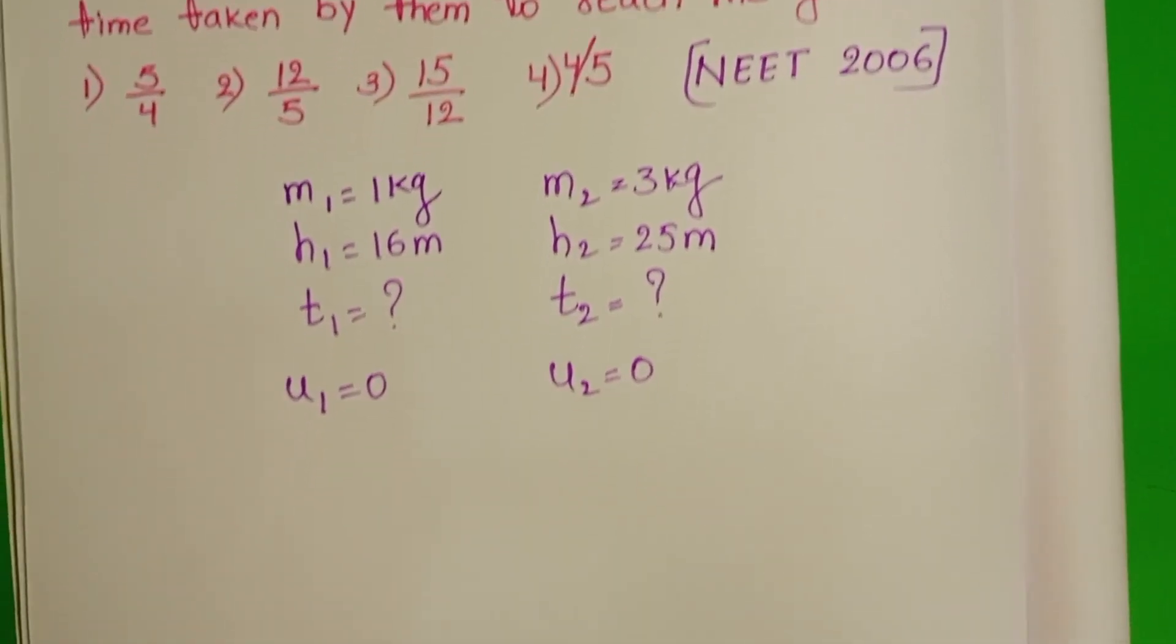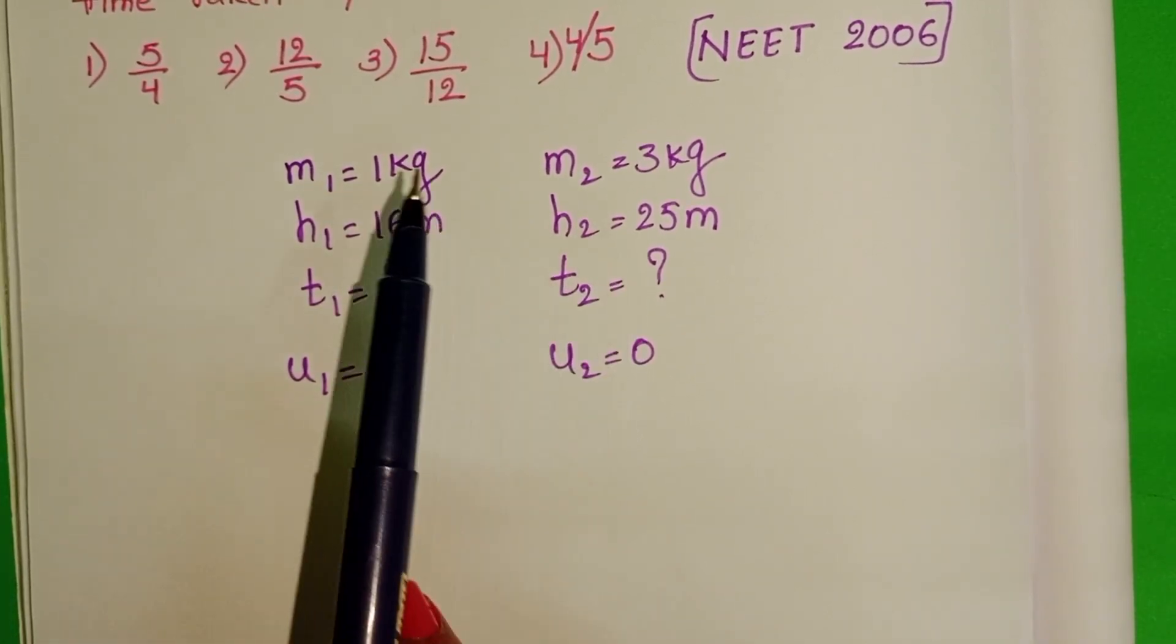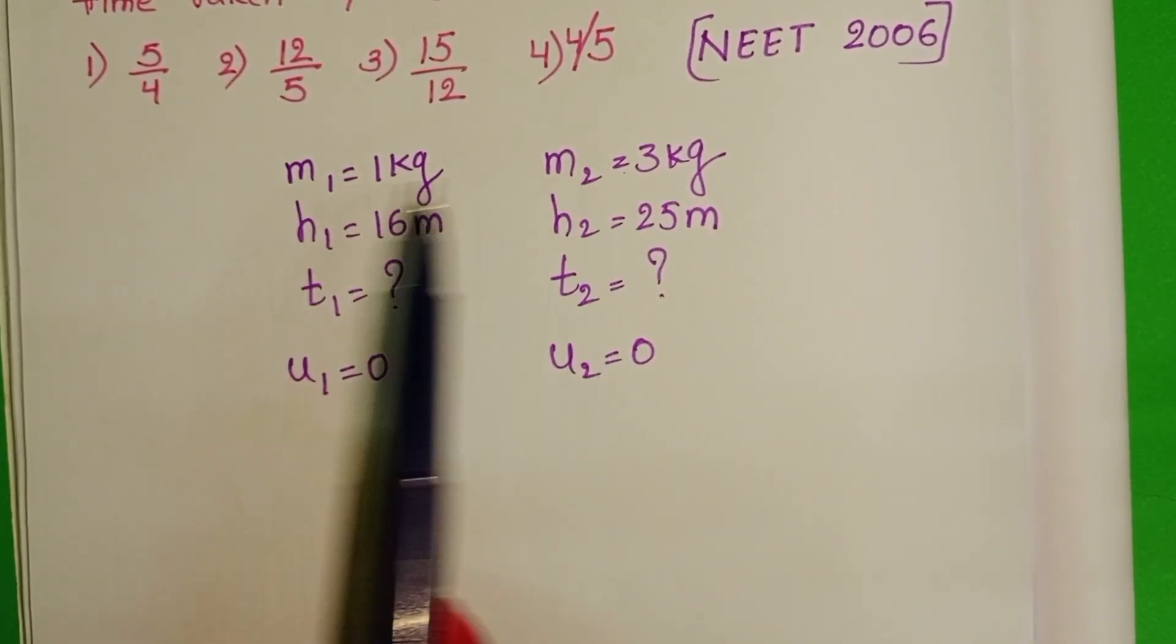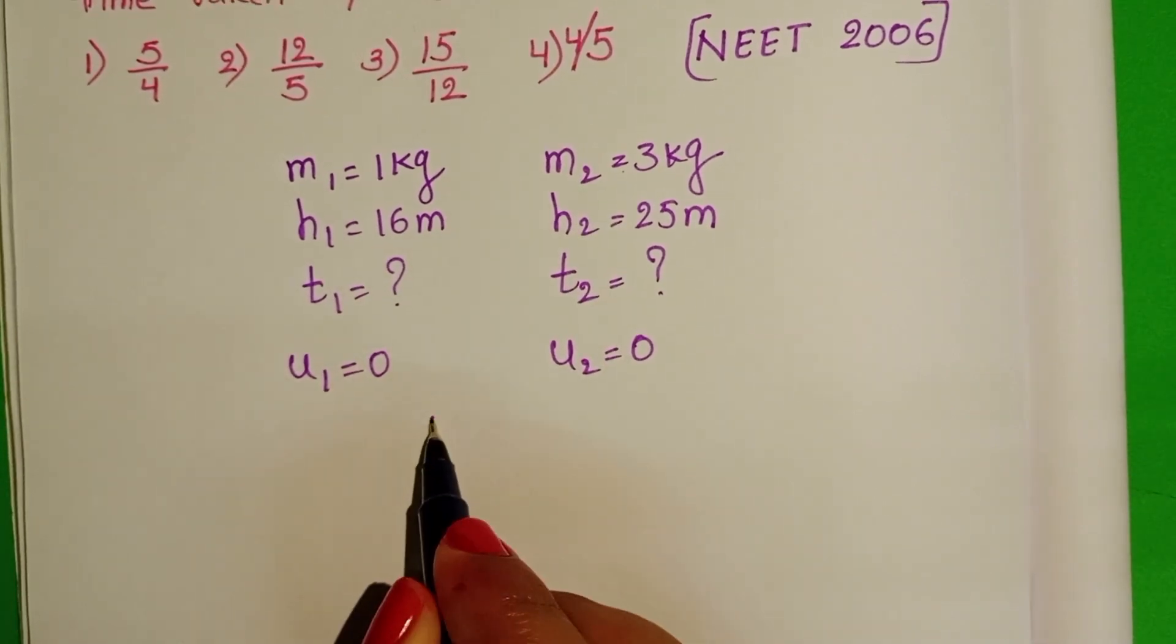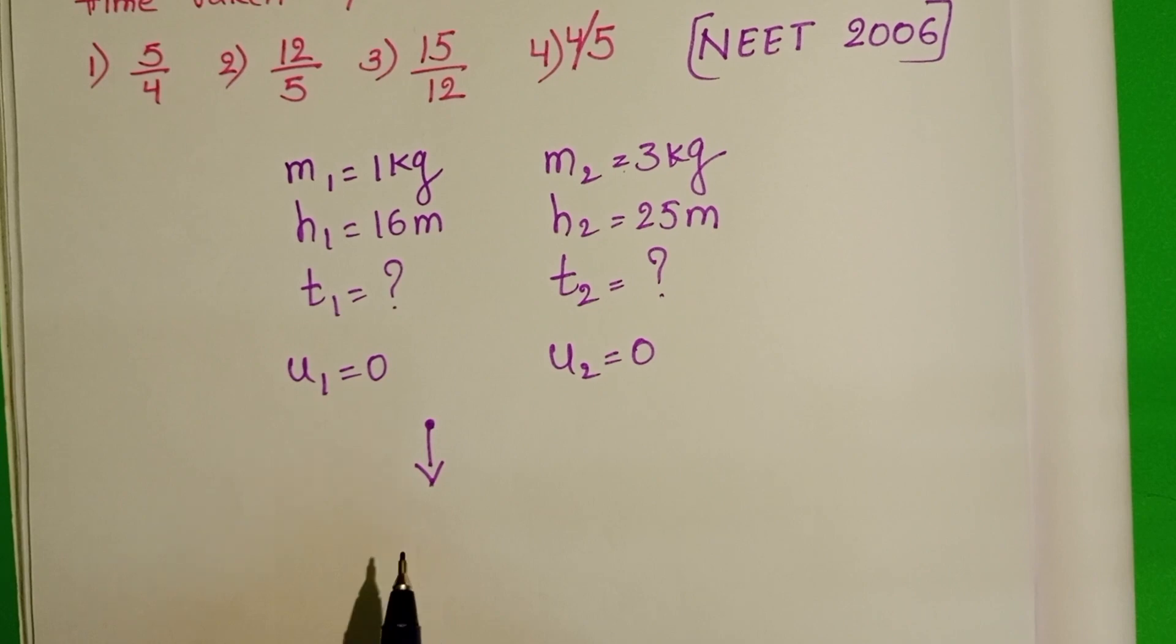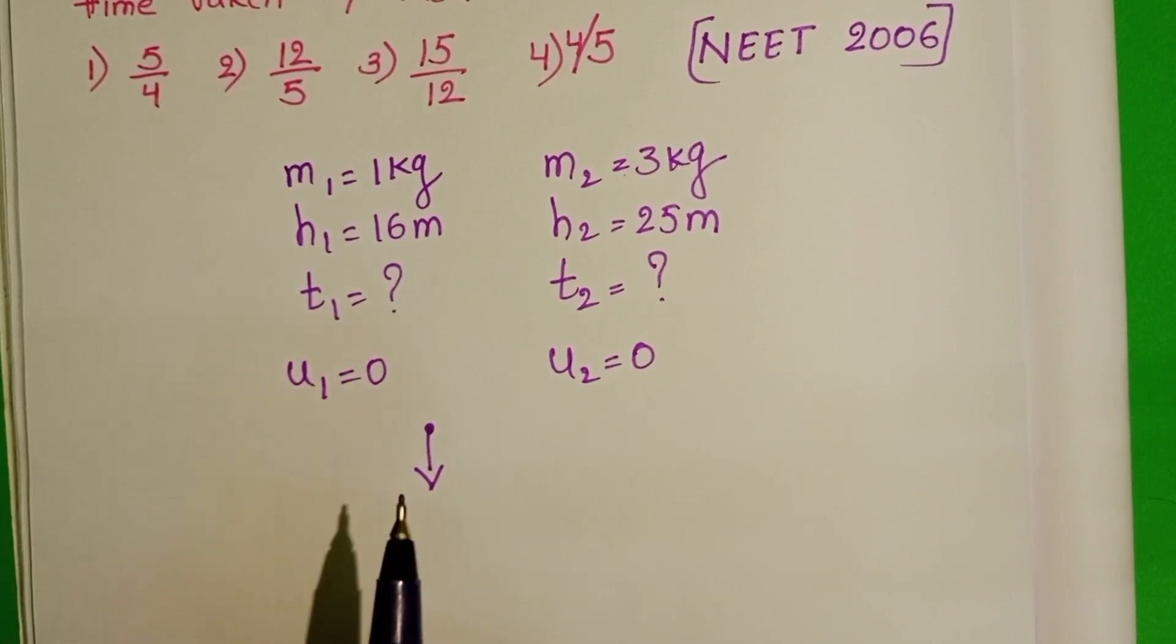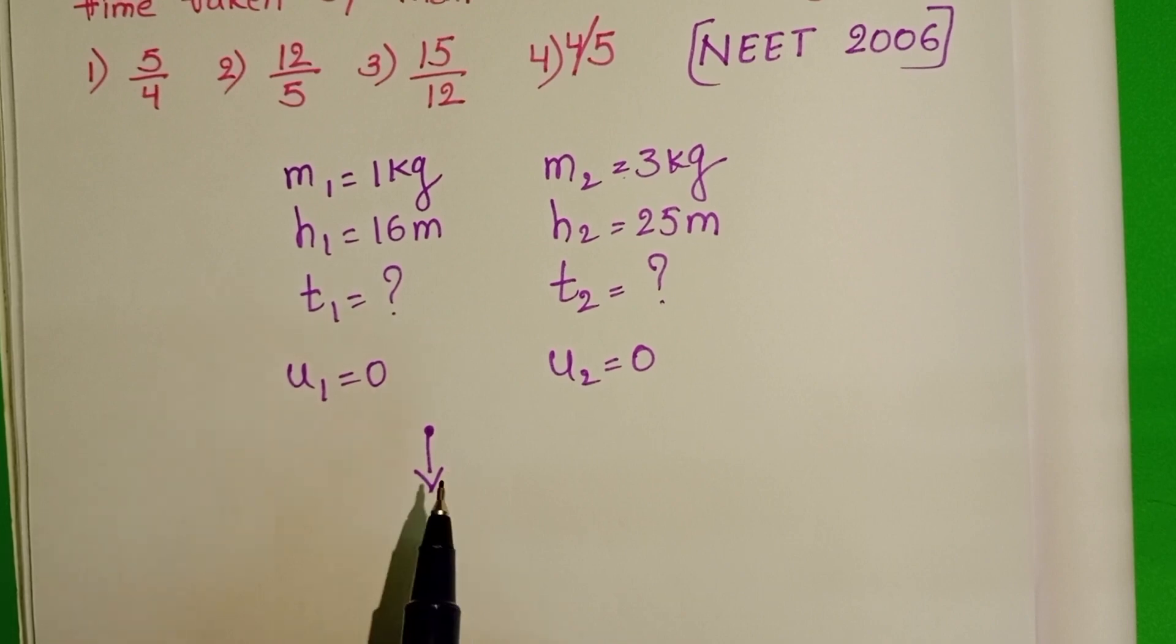The time taken by the two bodies to reach the ground does not depend upon the mass of the bodies. Why? Because whenever a body is in free fall motion, the acceleration due to gravity acting on the body is constant. It does not depend upon the mass of the body.